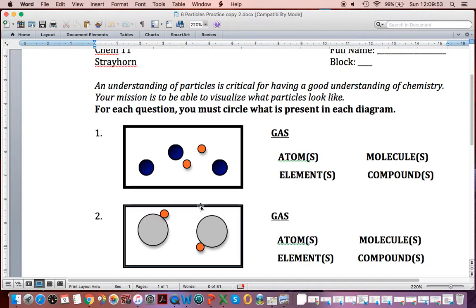This one, again, gas state. Now I look at this and I say, atom or molecule? Well, that's a molecule. And this is identical molecule. How do I know it's molecule? Because two atoms are stuck together. So I circle molecules here. Now I want to know, do I have elements or compounds? Well, I have two different elements stuck together, so it's going to be a compound.